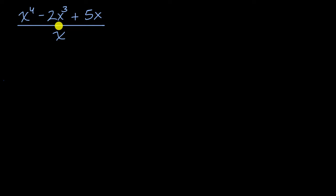So pause this video and see if you can have a go at that before we work through this together. So if we're saying what is this top expression divided by this bottom expression, another way to think about it is, what do I have to multiply? I'm going to multiply something, I'll put that in parentheses. If I multiply that something times x, I should get x to the fourth minus two x to the third plus five x.